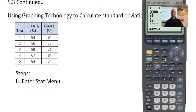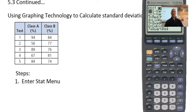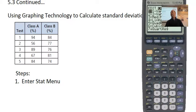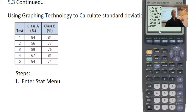Once you've got the numbers in the list, hit stat again. Cursor right to the Calc menu — that's step five. You're looking for one-var stats, number one. Hit enter. Now, how do you tell the calculator which list to use? You do second function, and you'll see the little yellow letters L1, L2, L3 — those are the lists. So you do second function, one, which gives you L1. Hit enter and the results should show up on your screen.